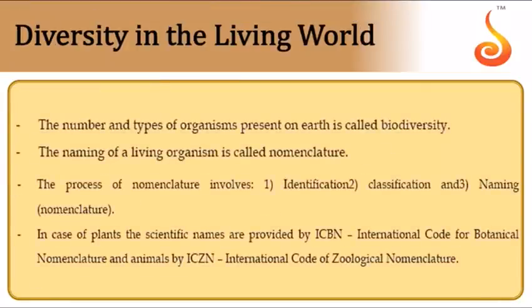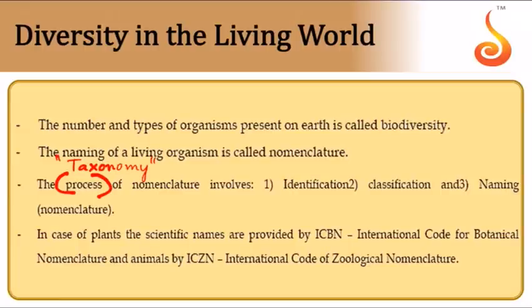Biodiversity refers to the enormous number and variety of organisms existing on this planet. To study this enormous diversity, you need to streamline your studying process through a process called taxonomy. The principles and processes associated with taxonomy include: first, identifying the organism; then classifying it; and finally, naming it.